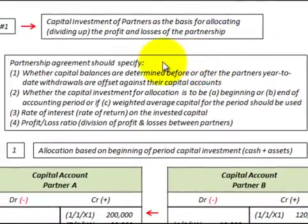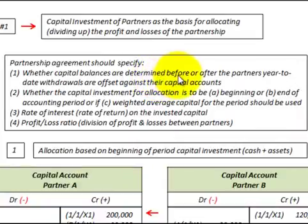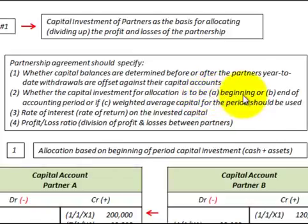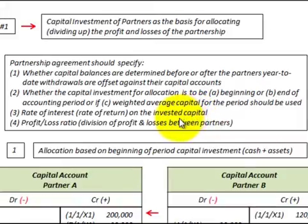Let's look at what a partnership agreement should specify. First, it should specify whether the capital balances are to be determined before or after the partner's year-to-date withdrawals are offset against their capital accounts. Second, whether the capital investment for allocation is to be determined based on the beginning or end of the accounting period, or whether a weighted average capital for the period should be used. Third, we'd have to determine the rate of interest or rate of return on the invested capital. And fourth, the profit or loss ratio — that's how we'd be dividing up the profits or losses between the different partners.